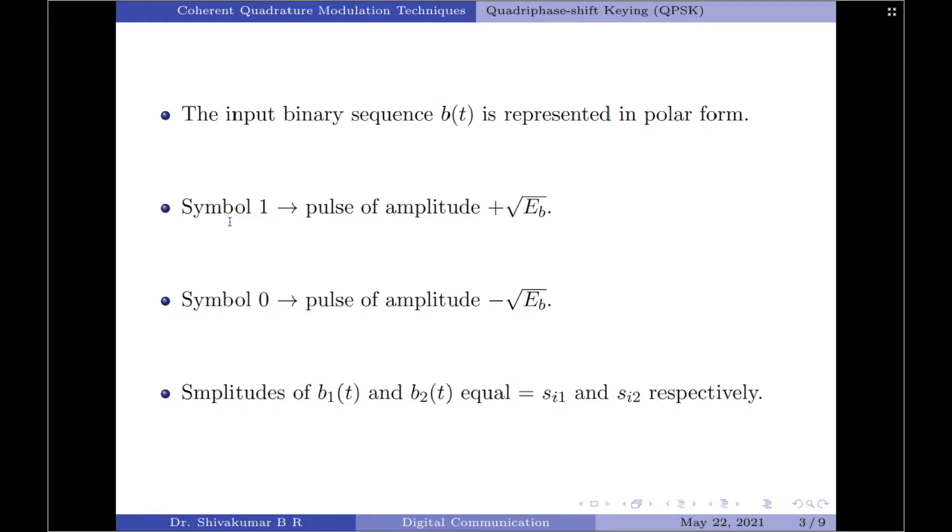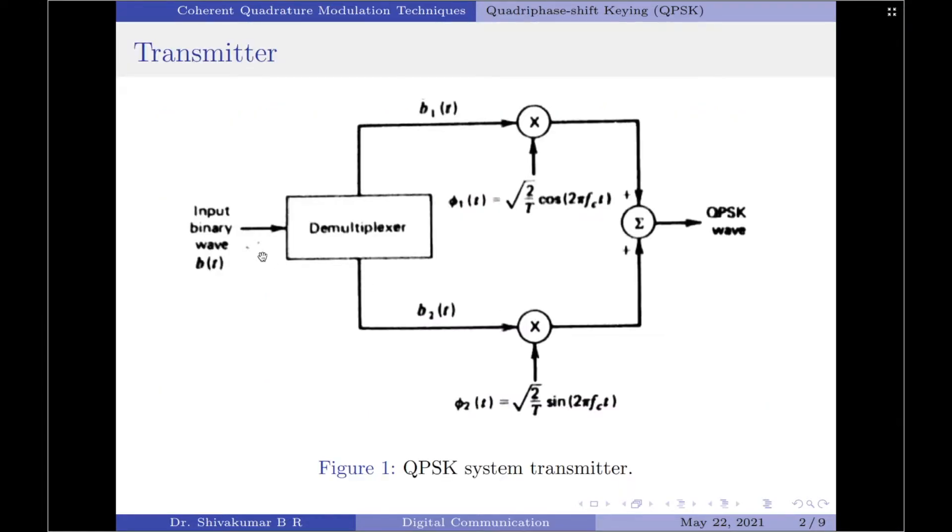Symbol 1 is represented by a pulse of amplitude plus root Eb, whereas symbol 0 is represented by a pulse of amplitude minus root Eb. This binary wave is divided by means of a demultiplexer into two separate binary waves consisting of odd and even numbered input bits.